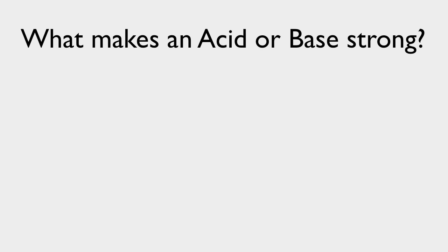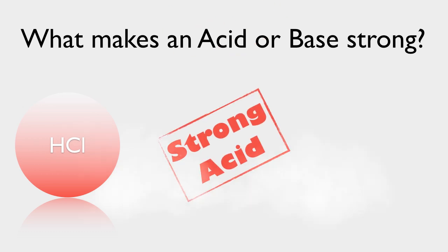Let's consider a prototypical strong acid, hydrochloric acid. If we put hydrochloric acid in water, it dissociates into a proton and a chloride ion. Because it dissociates completely, we say it's a strong acid.